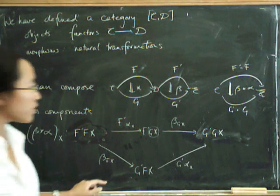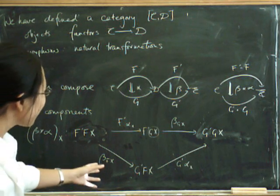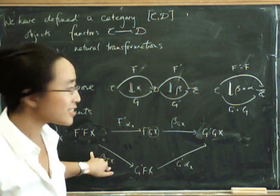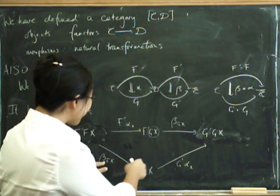Is that a problem that we had two different ways of getting there? Let's stare at this for a second. Oh, look! It's a naturality square for something, I hope. Hopefully, it's a naturality square for beta.